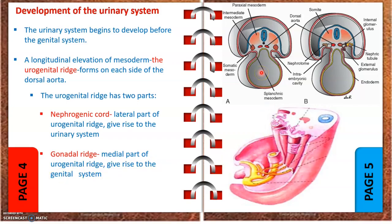If we section the embryo at the neck region, we can see the urogenital ridge with its two parts: the nephrogenic cord, which is the lateral part of the urogenital ridge, and the gonadal ridge, which is the medial part. These are the areas where the kidneys and ureter develop.